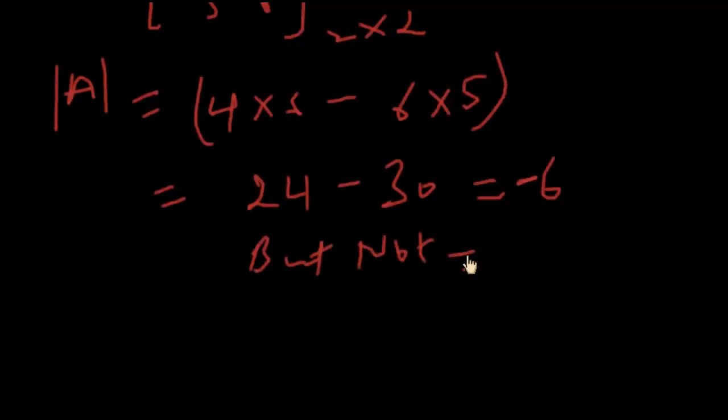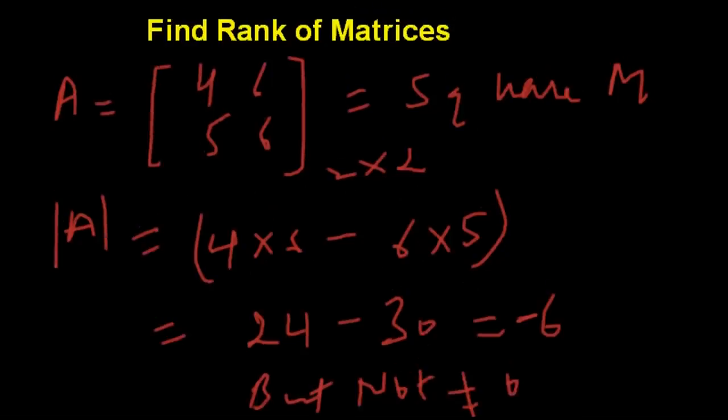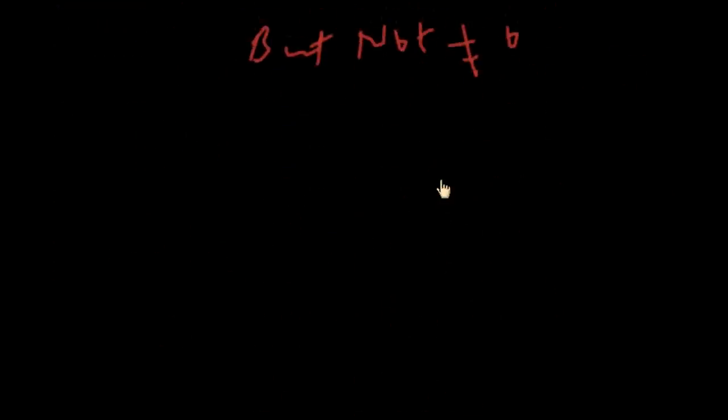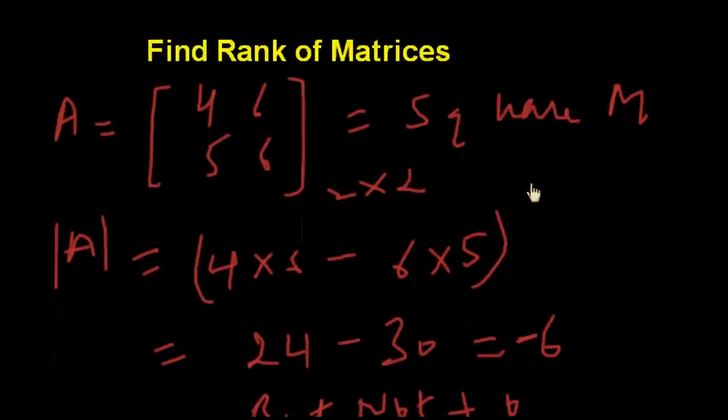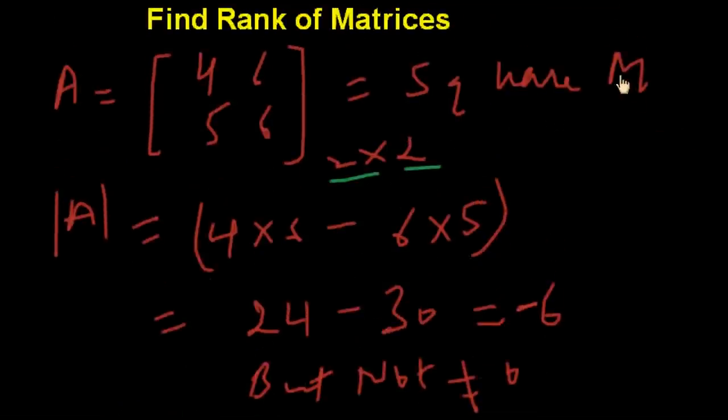So rank of A will be 2, because its order is 2 and it is a square matrix and its determinant is not 0. So there are three conditions for calculating the rank of a matrix.